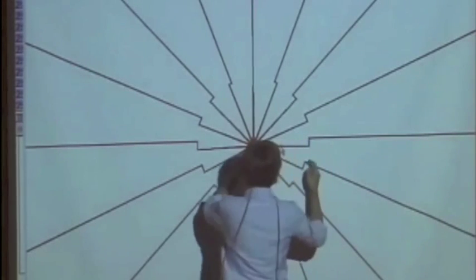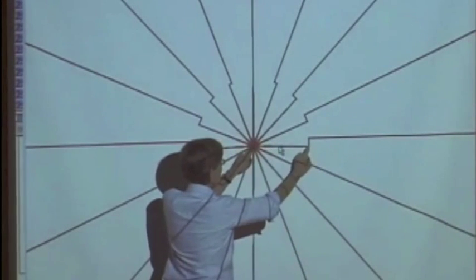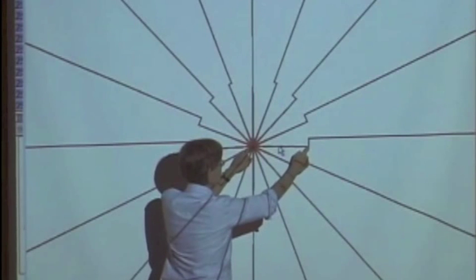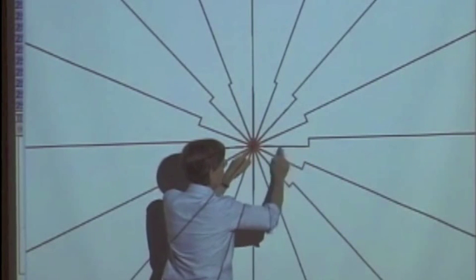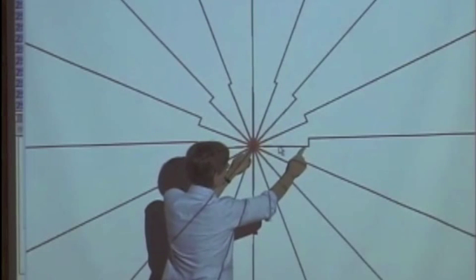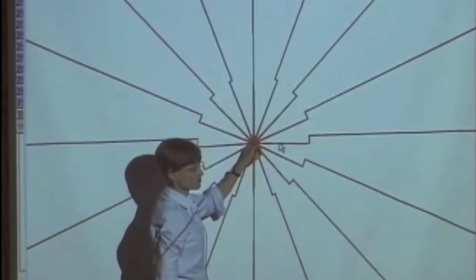for information traveling at the speed of light, information that the field has changed has now got that far. So anybody inside this circle would now be seeing a field pointing from the current location of the charge.